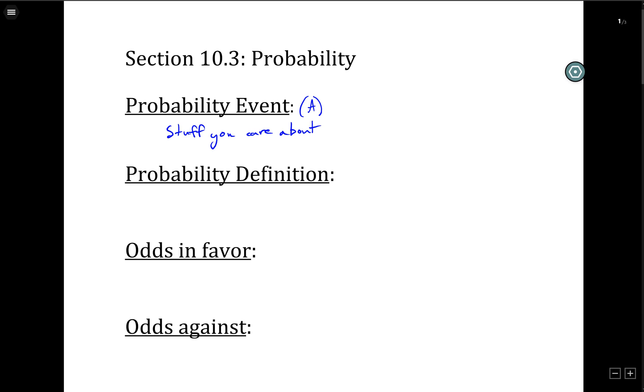So for example, maybe a probability event would be, what's the probability of drawing an ace out of the deck of cards? Or what's the probability of rolling a six? That drawing the ace is our A, our probability event. That drawing the six, or rolling the six, is our A, the probability event.